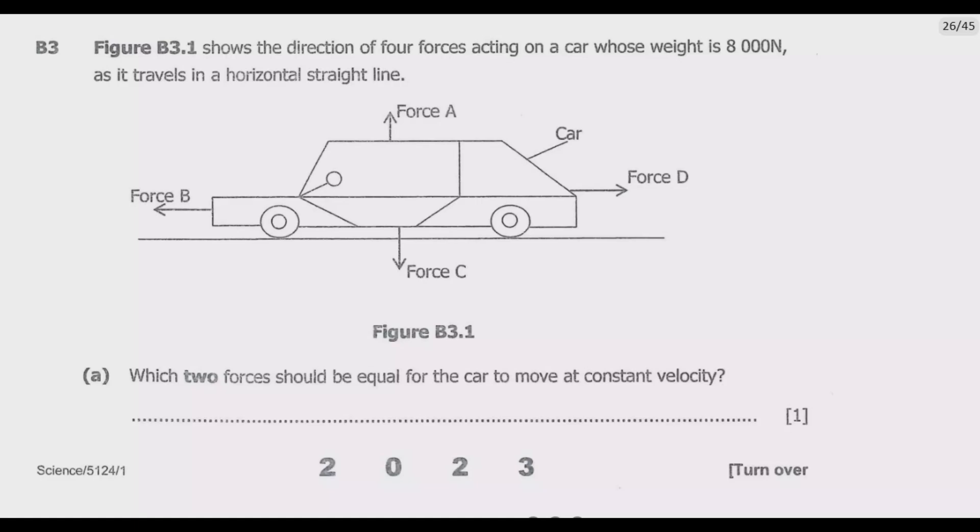For the car to move at a constant velocity, the driving force B must be equal to the resistive force D. If these two are equal, then the car will move at a constant velocity.